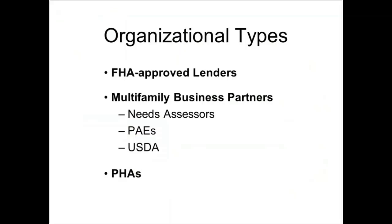As mentioned at the beginning of the presentation, there are different types of organizations that may register to use the CNA eTool. They include FHA-approved lenders, multifamily business partners — which include needs assessors, participating administrative entities or PAEs, and USDA — and multifamily participants, which consist of PHAs. The process for registering and obtaining M-IDs for users differs by organization type.